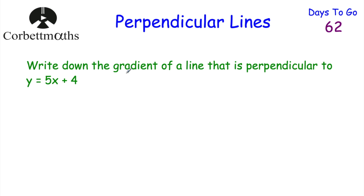Question: write down the gradient of a line that is perpendicular to the line y equals 5x plus 4. The gradient of this line is 5 because it's in the form y equals mx plus c. So the gradient of the perpendicular line will be the negative reciprocal — the reciprocal of 5 is one fifth, so the negative reciprocal is negative one fifth. And as a check, 5 times negative one fifth equals negative 1.